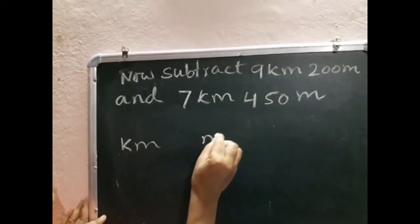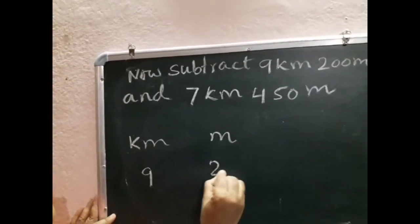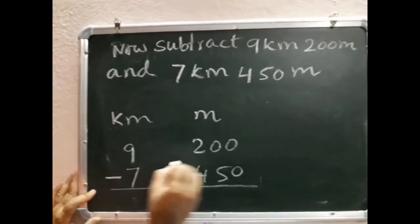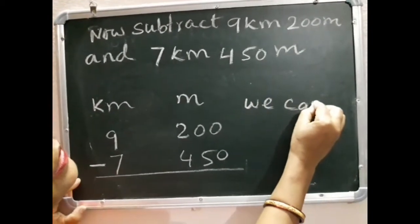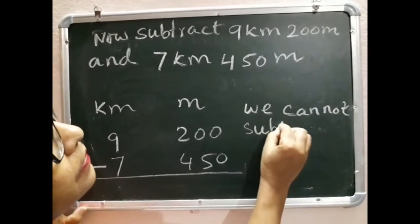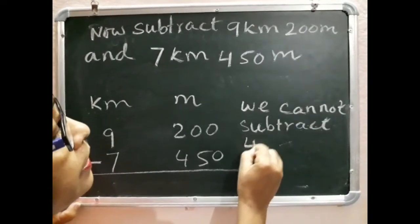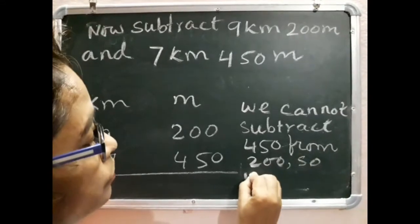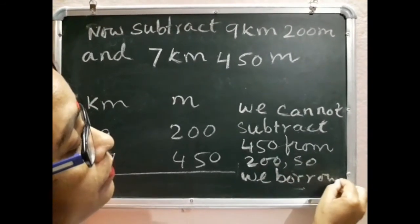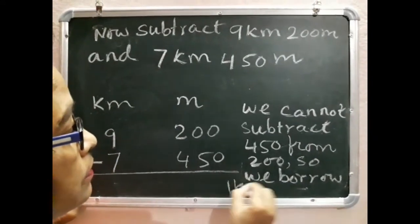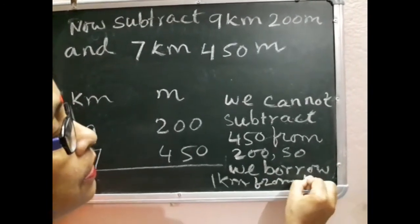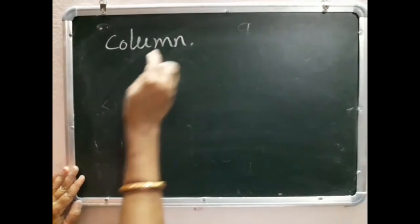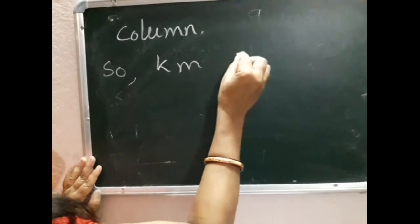Kilometer, meter: 9 kilometers 200 meters, 7 kilometers 450 meters. We cannot subtract 450 from 200, so we borrow one kilometer from the kilometer column.